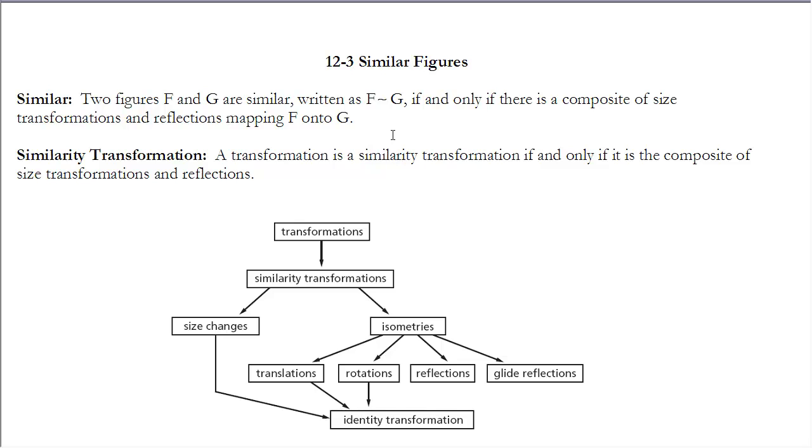Now the idea of these is called similarity transformations. So a transformation is a similarity transformation if and only if it is a composite of size transformations and reflections. So if I look at this chart down here, originally, everything that we did was down here in these isometries, these four. Now we're saying, we have transformations and there's similarity transformations. Well, all the isometries fall under that category of similarity transformations because there's still a composite of reflections and size changes. It's just that there's no size changes involved in the isometries. And then the other ones are size changes. All of those fall under that category of similarity transformations.